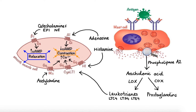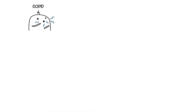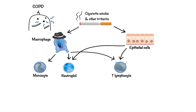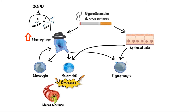Now let's switch gears and talk about COPD. When it comes to COPD, mast cells do not seem to play a significant role. Instead, the primary orchestrators of inflammation are macrophages. Cigarette smoke and other irritants inhaled into the lungs may activate alveolar macrophages and airway epithelial cells to release multiple chemokine mediators, which attract monocytes, neutrophils and T lymphocytes. Monocytes are attracted into the lung to differentiate into macrophages, thereby leading to increased macrophage numbers. Neutrophils produce proteases, which are potent stimulants of mucous secretion, and are associated with chronic bronchitis.